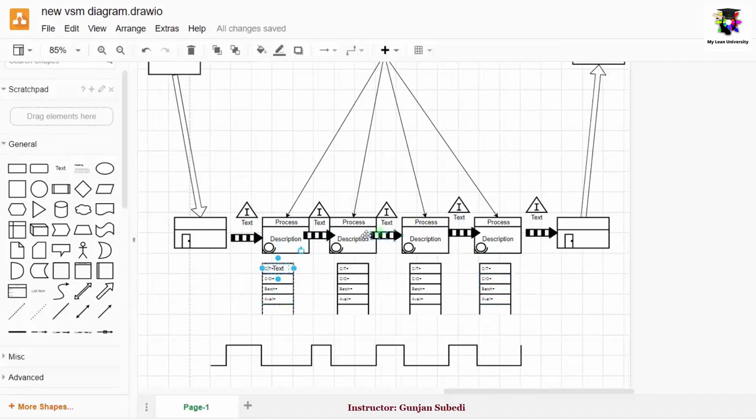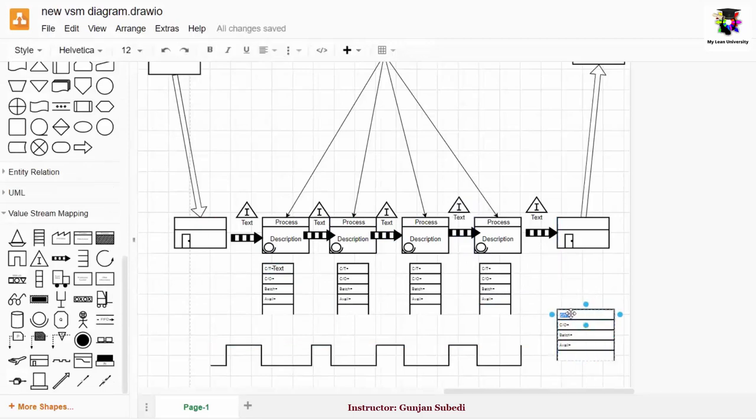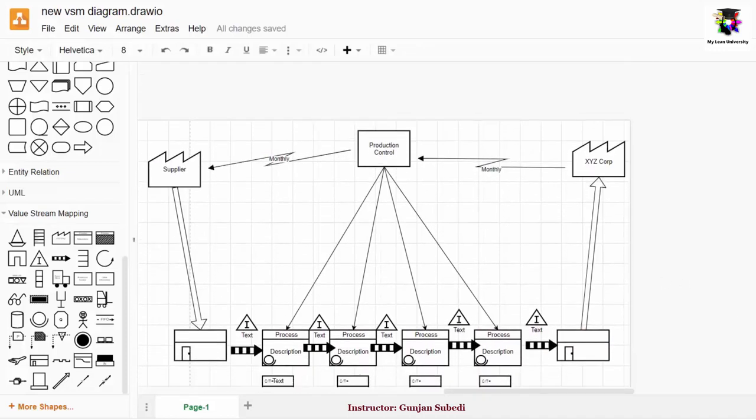Finally, after filling all this information, you can click this data box again and place it somewhere here. So we can edit these information and instead of that, we can write the final summary information such as takt time, total value added and non-value added time, cycle time, etc. So this is how we create a value stream map with the help of draw.io.